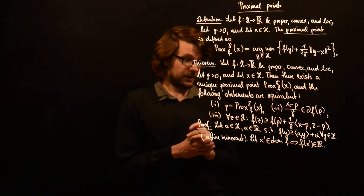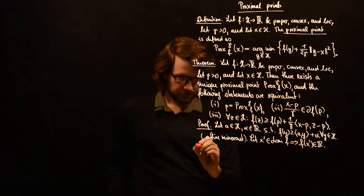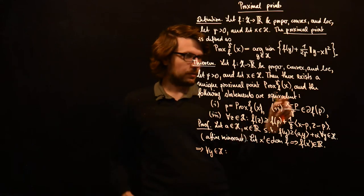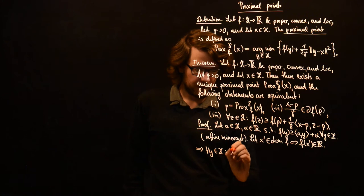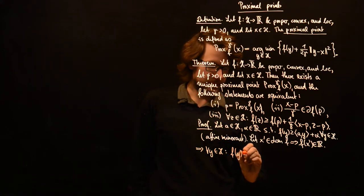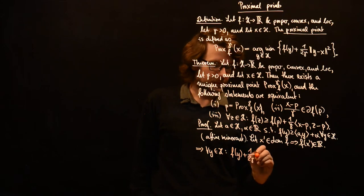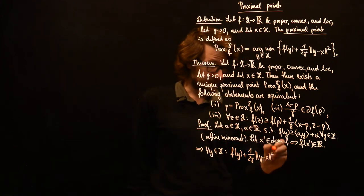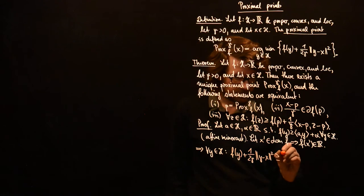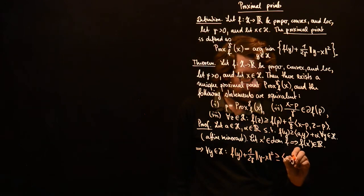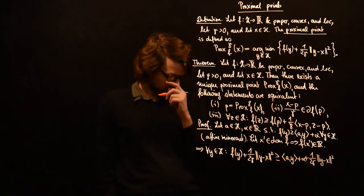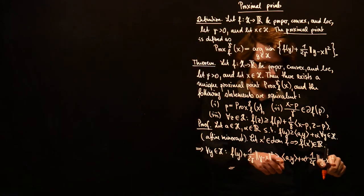So now, for all y in H, what is the consequence for this optimization problem? We have f(y) plus 1 over 2 gamma times the norm of y minus x squared. Using the affine minorant, this is greater or equal than the inner product of a with y plus alpha plus 1 over 2 gamma times the norm of y minus x squared. This is a quadratic expression in y combined with a linear expression in y.